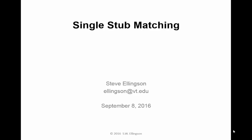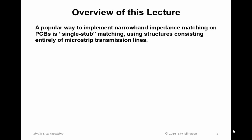Hello and welcome to a lecture on single stub matching. I'm Steve Ellingson. A popular way to implement narrowband impedance matching on printed circuit boards is single stub matching using structures consisting entirely of microstrip transmission lines. This isn't the only way to do it, but it is a very popular way and one well worth learning.